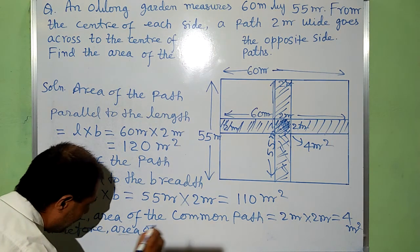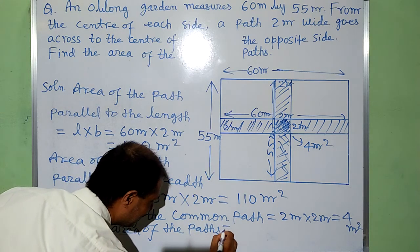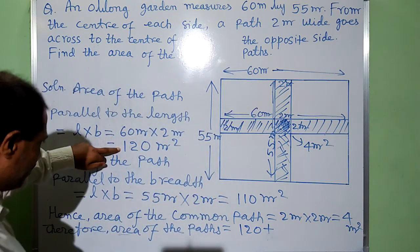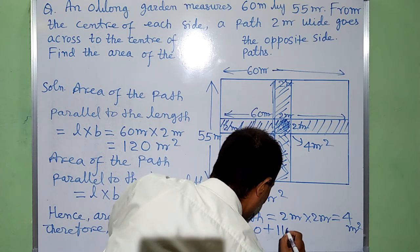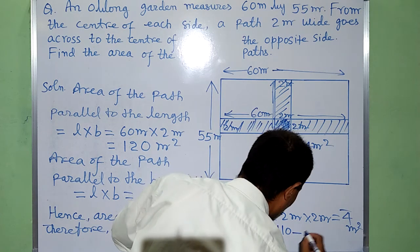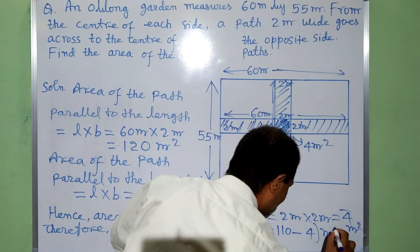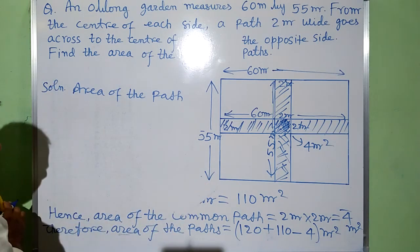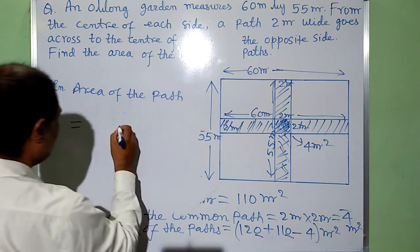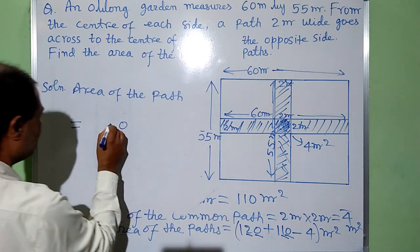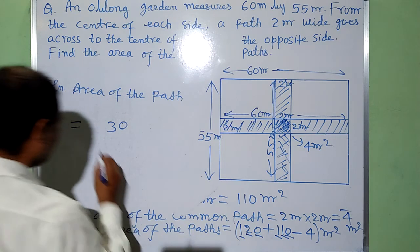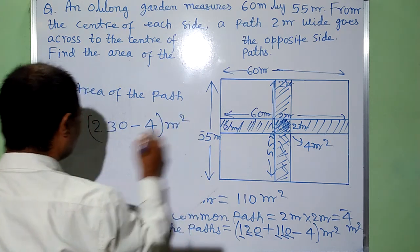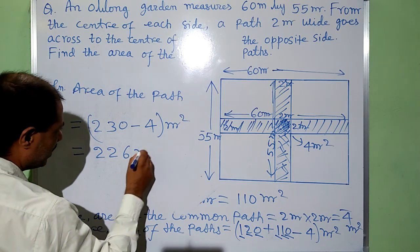Therefore, area of the path: this path will be added 120 meter square, this is also added 110, but this will be subtracted minus 4 meter square. We calculate: 120 plus 110 minus 4 equals 226 meter squared. In this way, we have 226 meter squared.